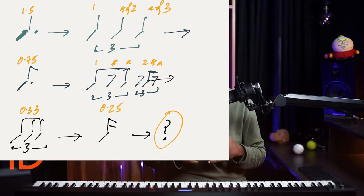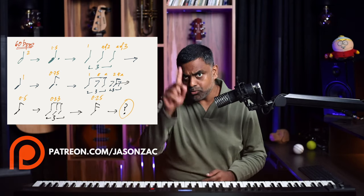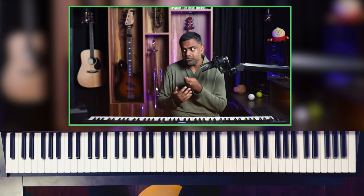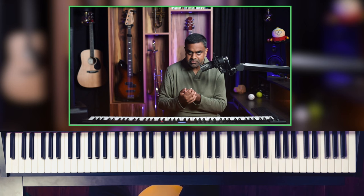So two minims equal a bar of four, and three minim triplets also equal a bar of four beats — one semibreve value. We've covered minim, dotted crotchet, and minim triplets. Next is on-the-beat notes: one, two, three, four, one, two. So we went from one two three four, to one-and two-and three-and four-and, to the minim triplet feel, and now on the beat: one, two, three, four.